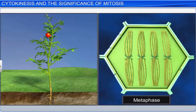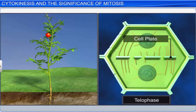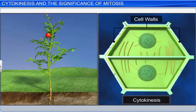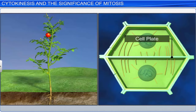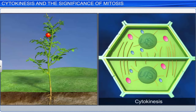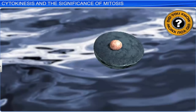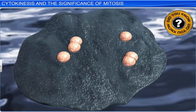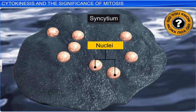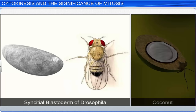Plant cells, on the other hand, have a relatively inextensible cell wall, and so cell division is initiated by the formation of a cell plate in the center of the cell. Gradually, this plate grows outward to meet the existing lateral cell walls. The cell plate represents the middle lamella of the cell wall. During cytokinesis, organelles like plastids and mitochondria are equally distributed between the daughter cells. In some organisms, karyokinesis is not followed by cytokinesis, which results in the formation of a syncytium — a cell with multiple nuclei. Such a syncytium is found in the early embryo of Drosophila and the liquid endosperm of coconut.